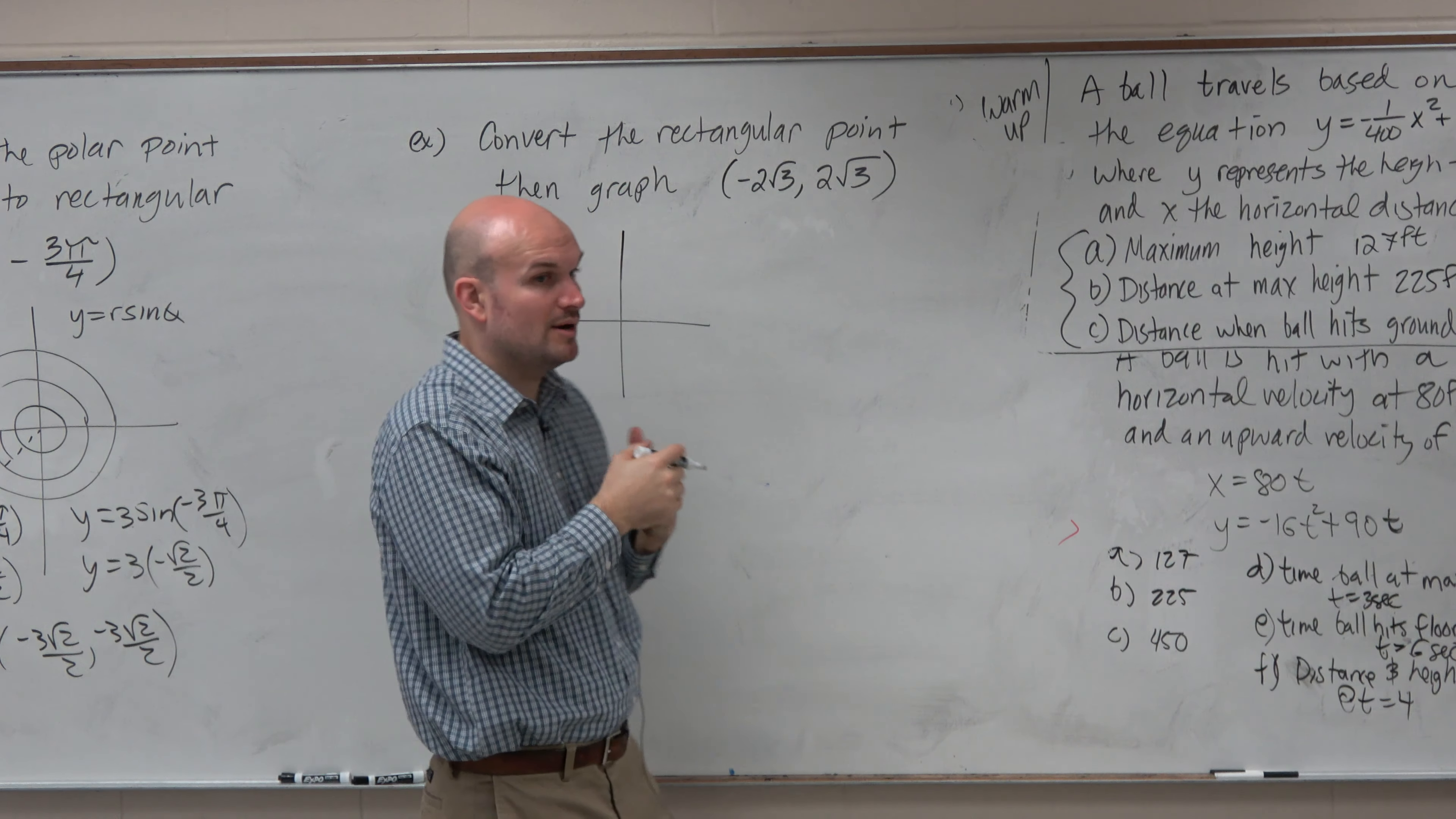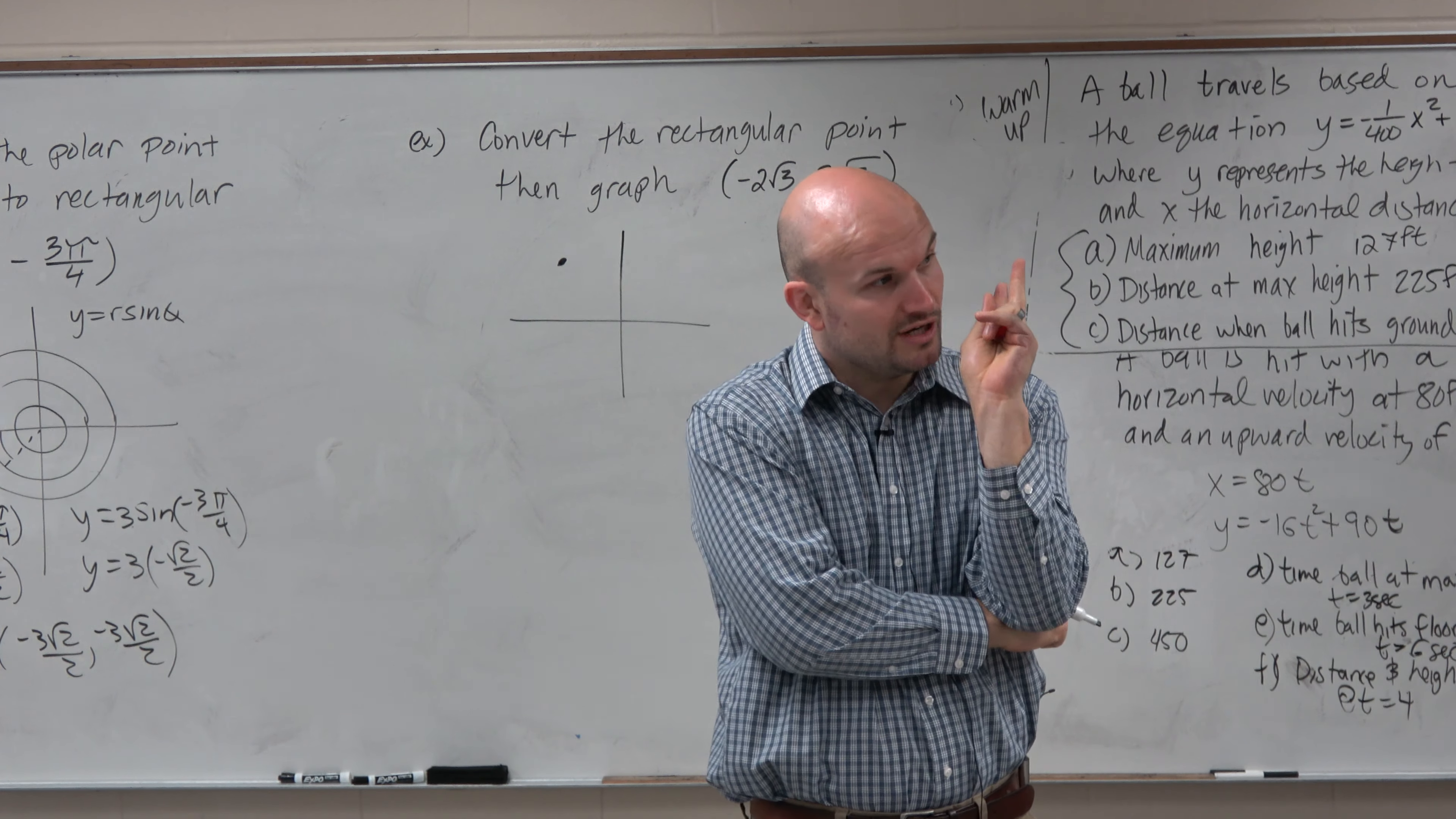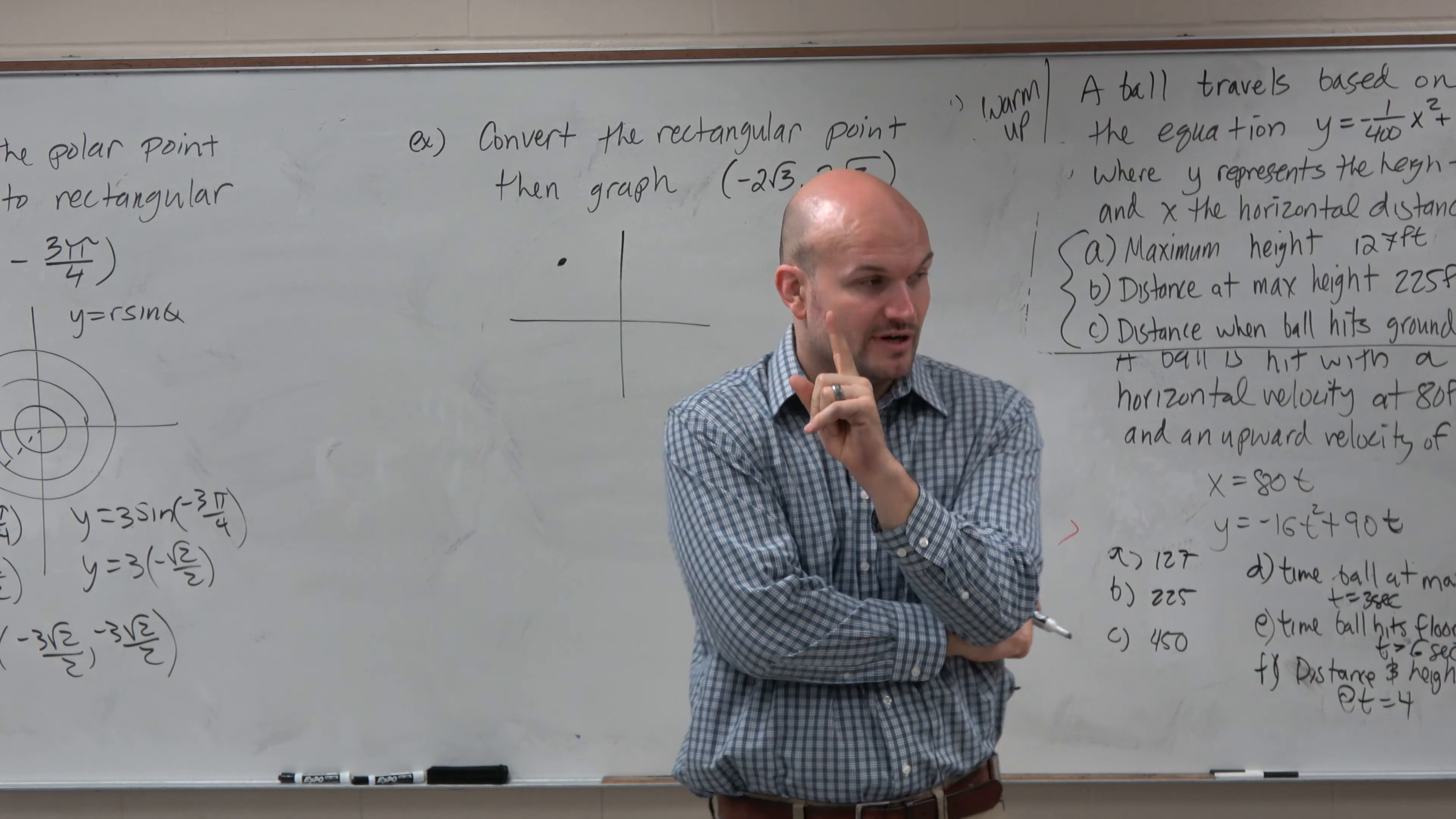Now again, if I want to be able to remember what we need for polar form, we need to figure out r and we need to figure out theta, correct? Now it's very important for you to understand, r is basically the distance away from the origin. So what I'm going to need to do then is create a right triangle. Agreed?